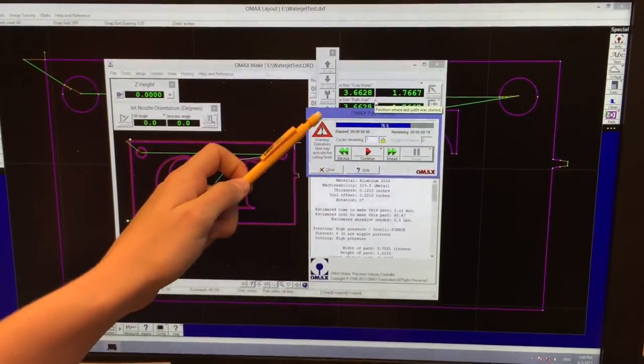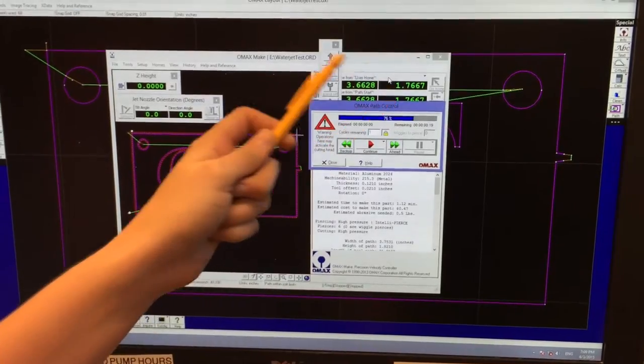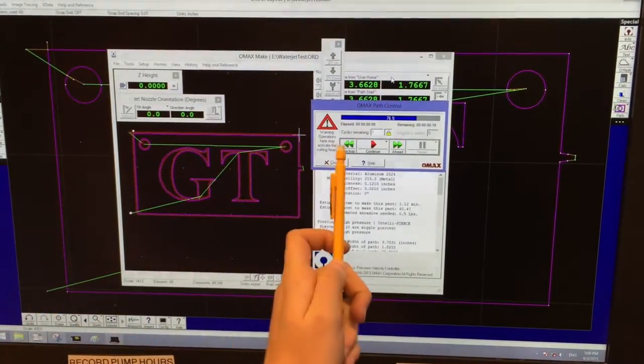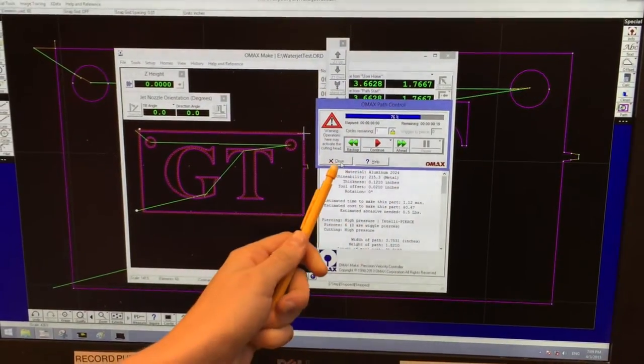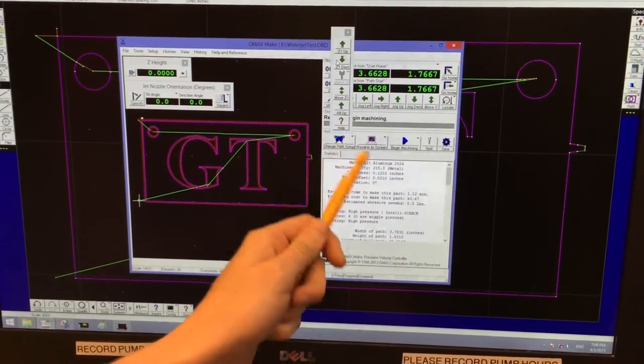So as you can see on the computer, a dialog box called Path Control has opened up. Don't hit any other buttons yet. Just go directly to Close. And we're back to where we started.